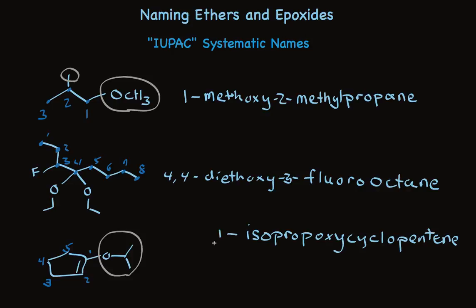So the approach used by the IUPAC system names these as alkane compounds, and the alkoxy group is always a substituent.